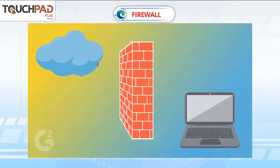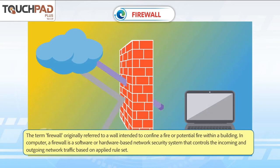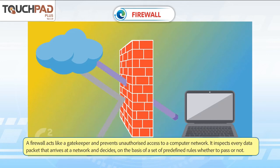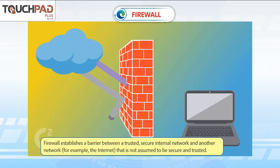Firewall: The term firewall originally referred to a wall intended to confine a fire or potential fire within a building. In computing, a firewall is a software or hardware-based network security system that controls the incoming and outgoing network traffic based on applied rule sets. A firewall acts like a gatekeeper and prevents unauthorized access to a computer network. It inspects every data packet that arrives at a network and decides on the basis of predefined rules whether to pass or not. A firewall establishes a barrier between a trusted, secure internal network and another network, such as the internet, that is not assumed to be secure and trusted.